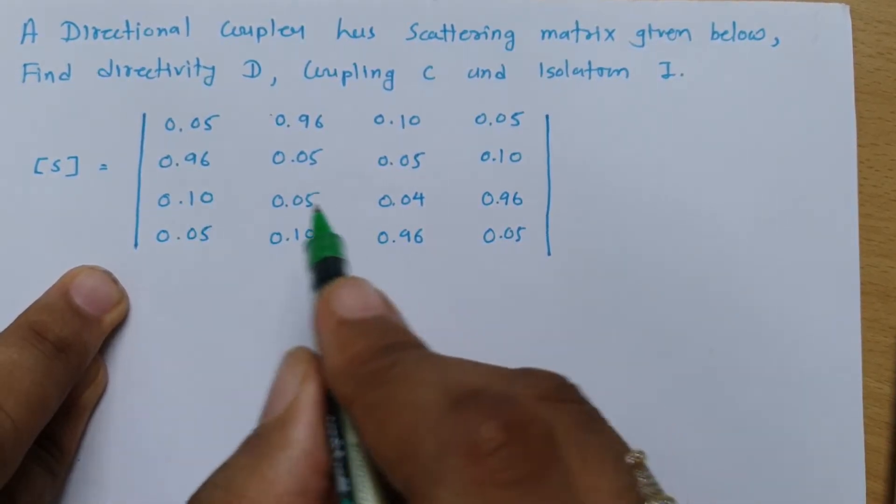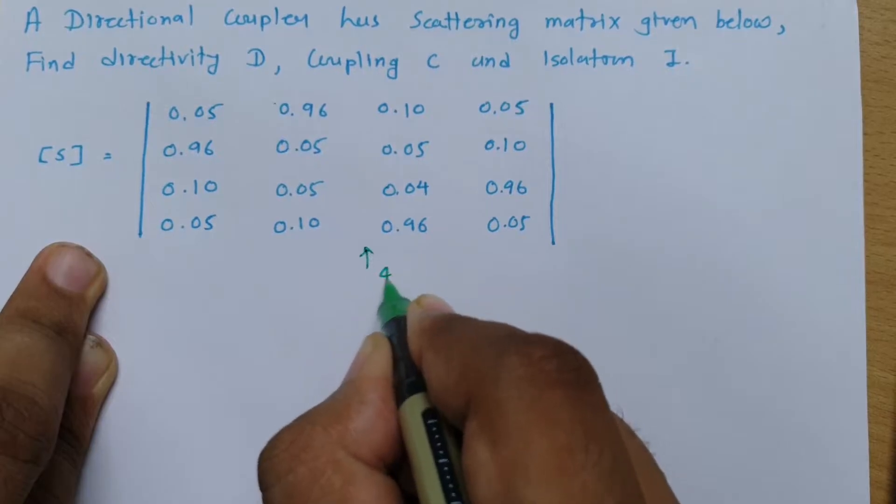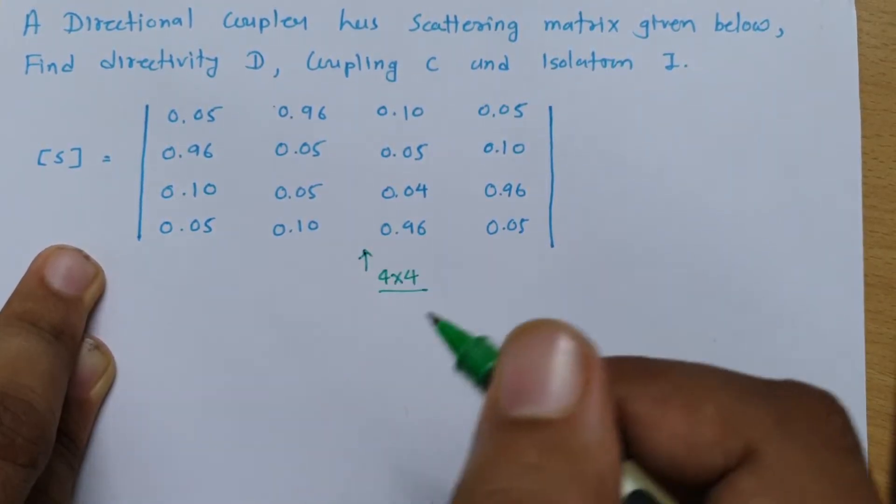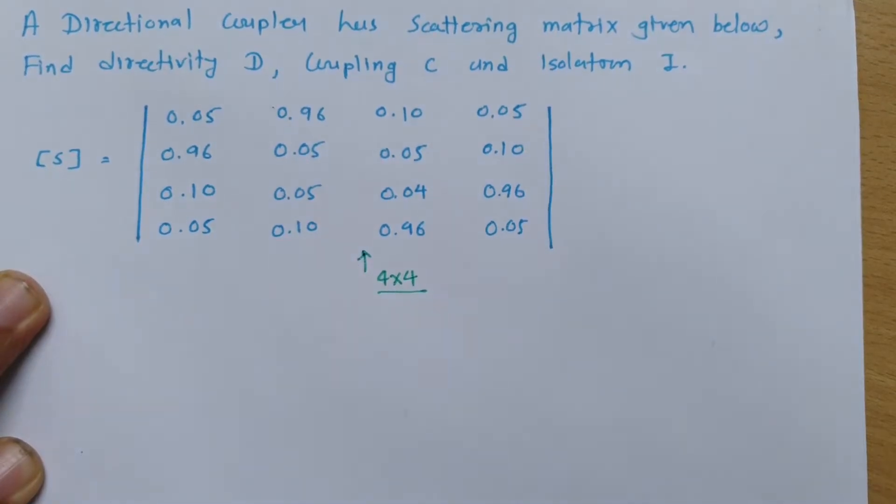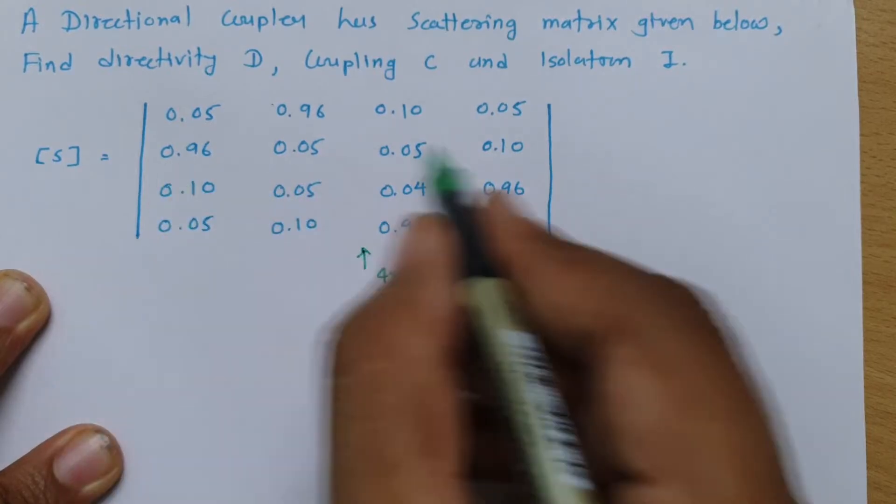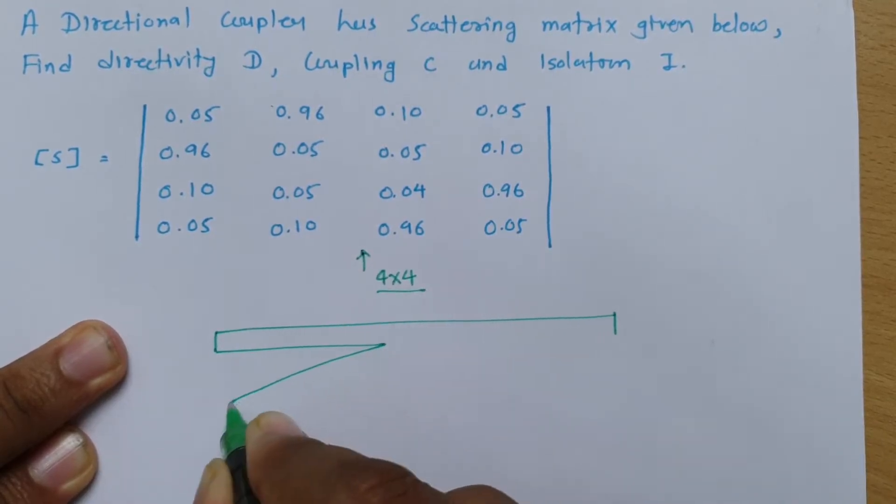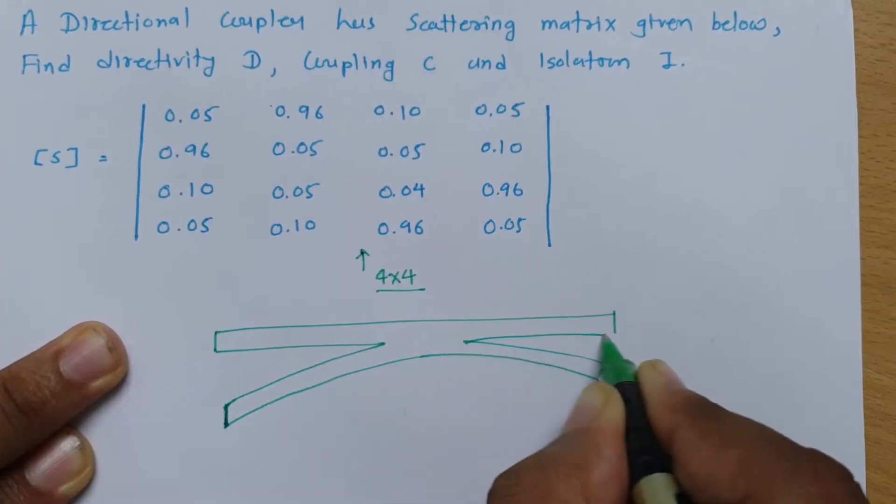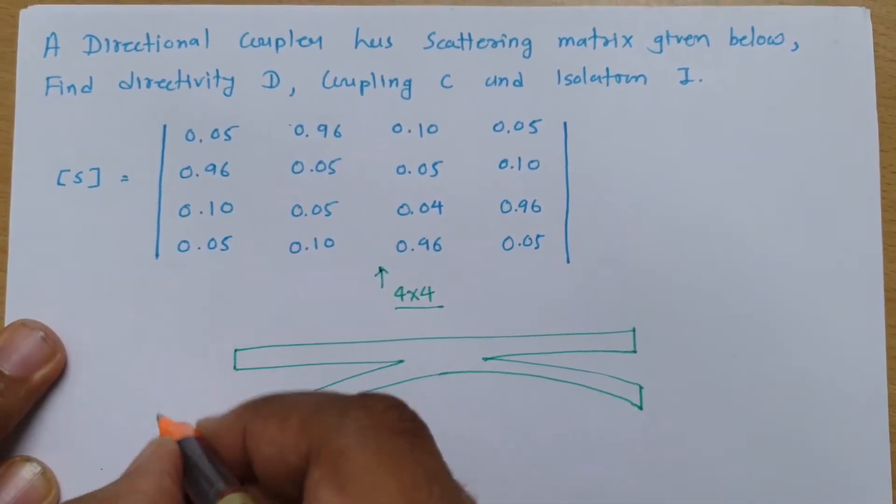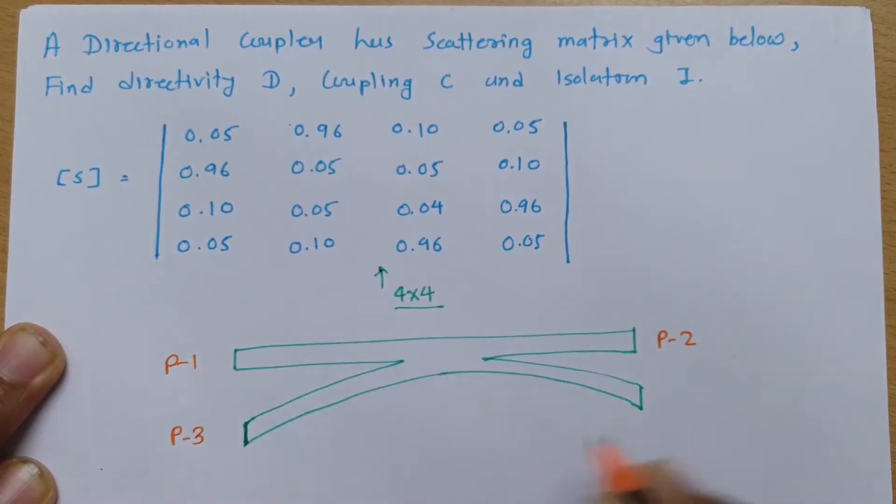One thing you can see clearly is that we have a directional coupler with a 4x4 matrix. As this is a 4x4 matrix, this is a 4-port directional coupler. Let me plot that directional coupler so it will be more clear. If I draw a directional coupler as I am drawing it over here, you can understand it properly. This is a 4-port directional coupler. If I say this is port 1, this is port 2, this is port 3, and this is port 4.